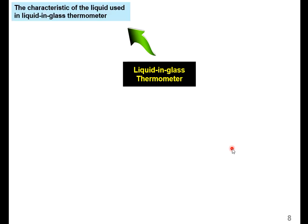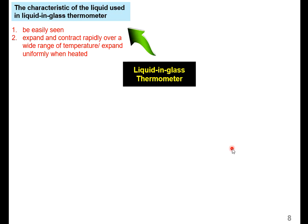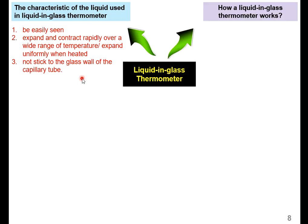We are now moving on to the liquid-in-glass thermometer. First, the characteristics of the liquid used: because the thermometer is glass and very thin, the liquid used must be easily seen. It expands and contracts rapidly over a wide range of temperature and expands uniformly when heated. It does not stick to the glass wall of the capillary tube.